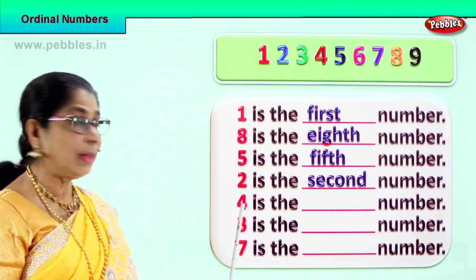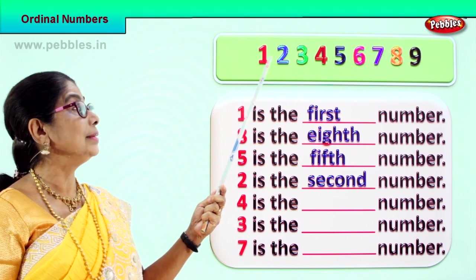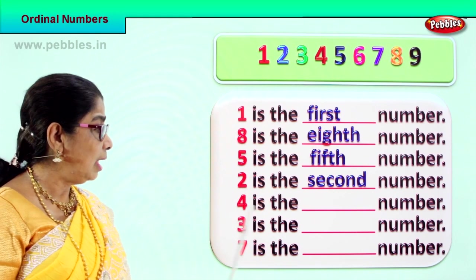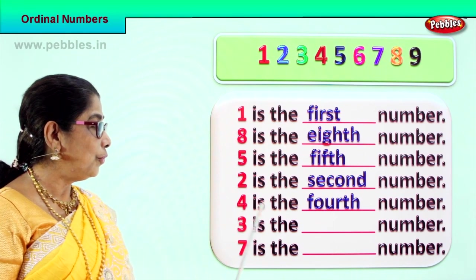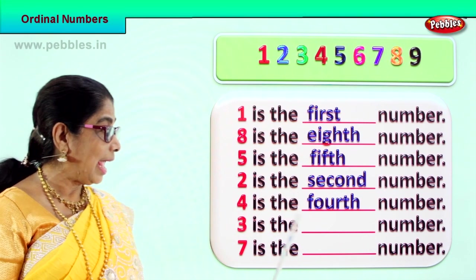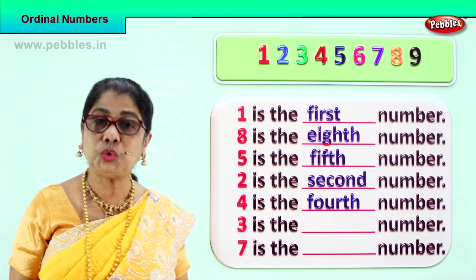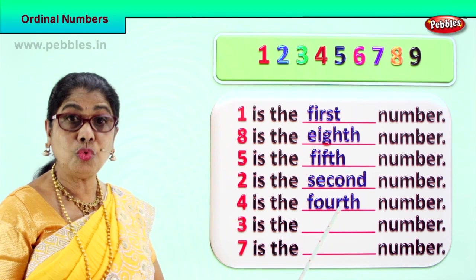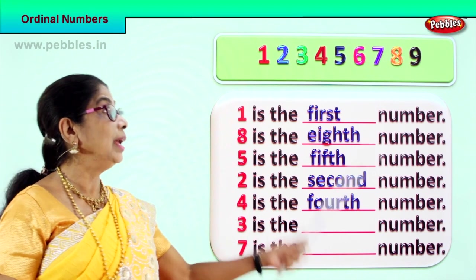Now let's see number four. Let's see the position of four. First, second, third, fourth. In the ordinal order, number four is the fourth number. Spell fourth: F-O-U-R-T-H. Spell again: F-O-U-R-T-H. Number four is the fourth number.